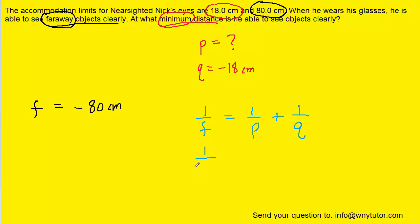So we're going to have 1 over negative 80. And then for the q, it's negative 18. So the fact that q is negative 18 is going to change this plus sign to a minus sign. So in effect, we have minus 1 over 18.